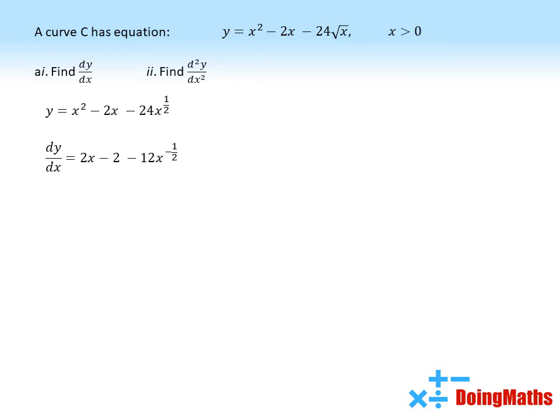Then we differentiate again. 2x becomes 2, the negative 2 disappears. And then for the last term, we multiply the minus a half by the 12 to give us a 6, and we take another one off that power to give us minus 3 over 2.